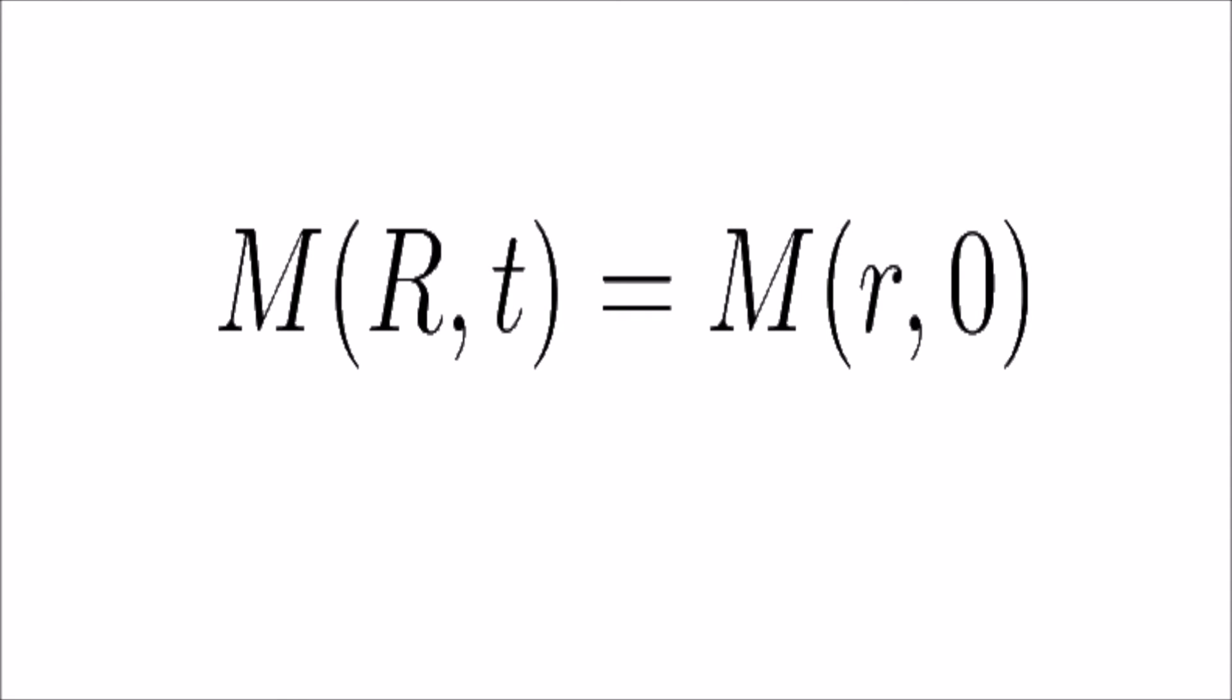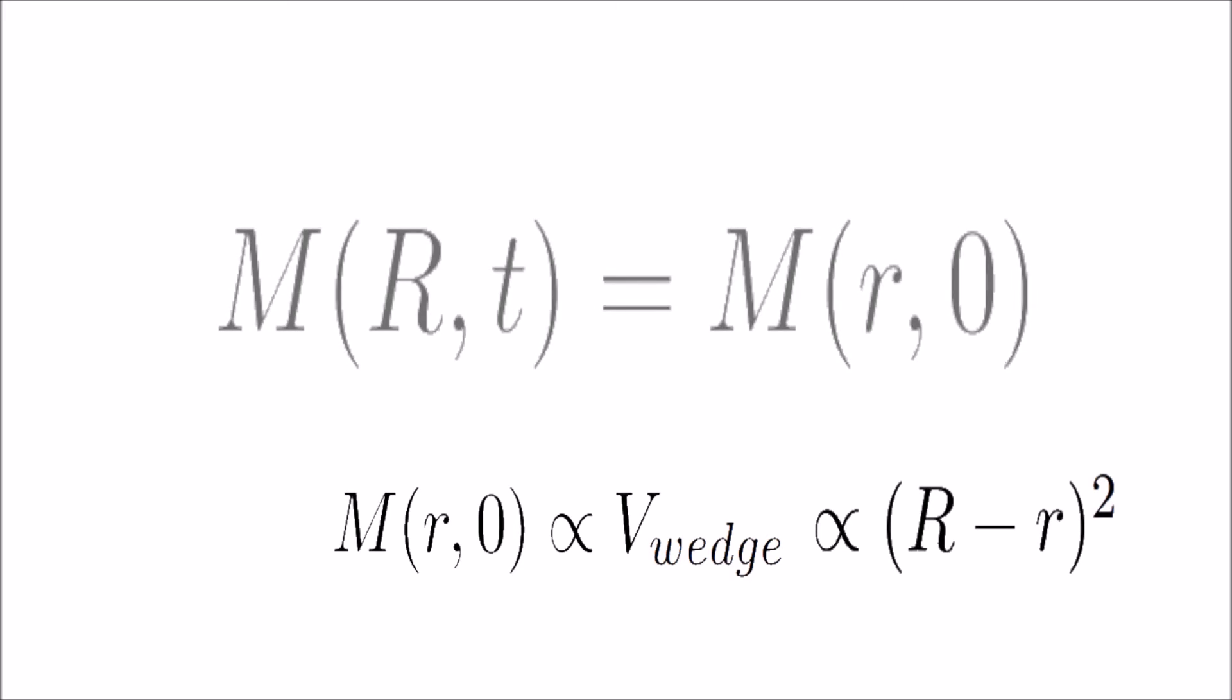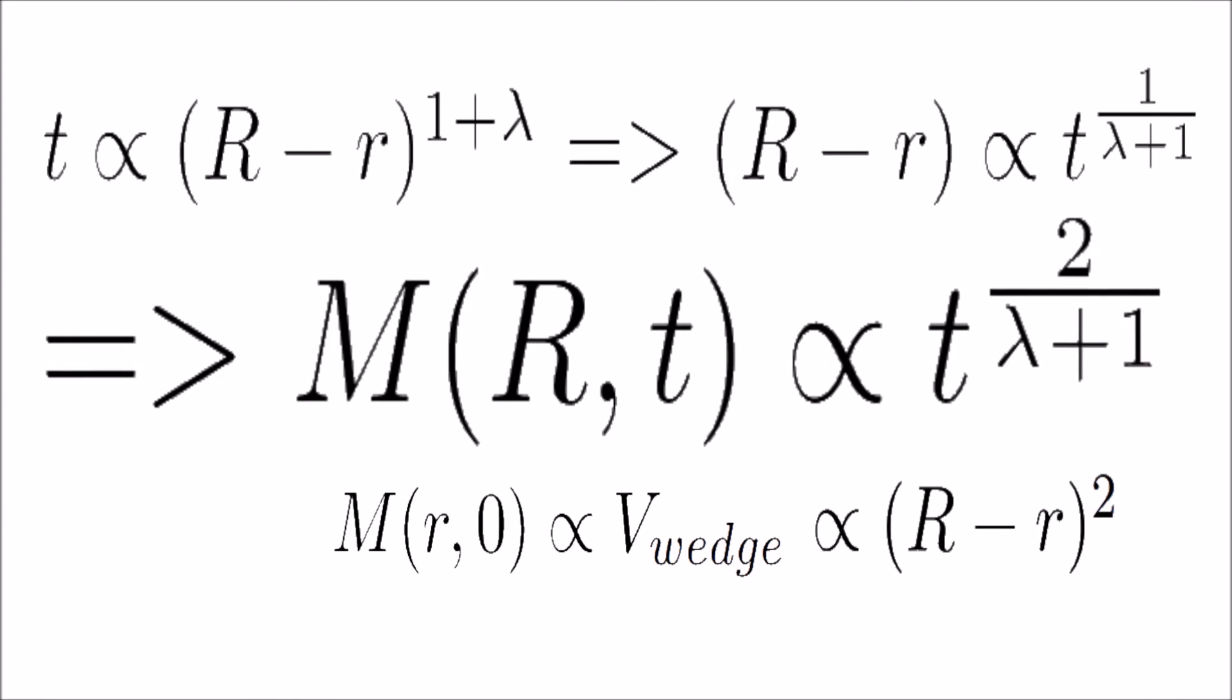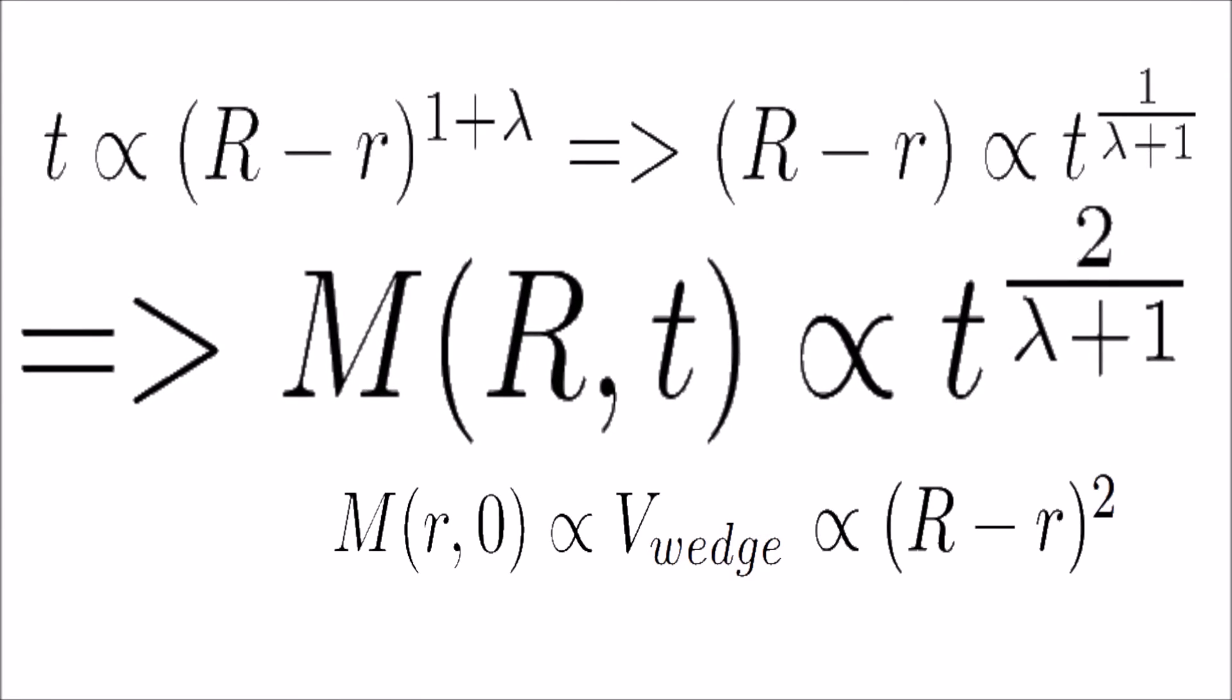At time t, the mass that is now at the edge is the same mass that was at point r at time t is zero. This means that the mass at the edge at time t is proportional to t to the power 2 over 1 plus lambda.